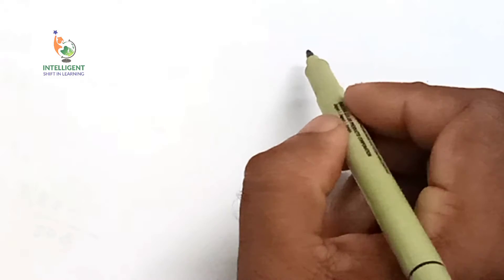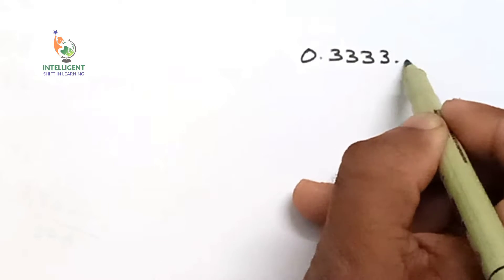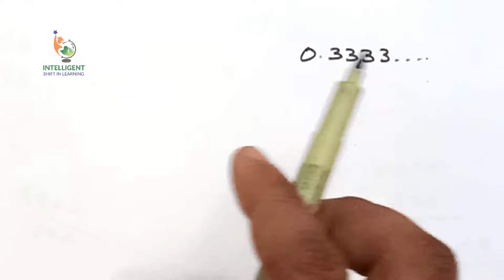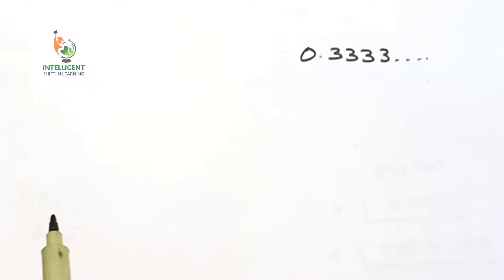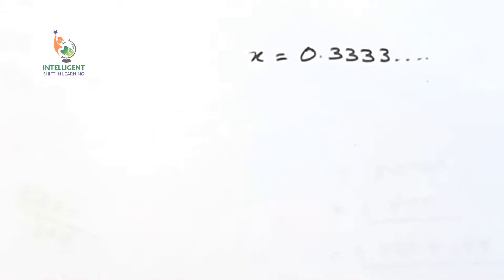The question is: show that 0.333... can be expressed in the form p by q, where p and q are integers and q is not equal to 0. That means we have to express 0.333... in rational form. Let us consider x is equal to 0.333...